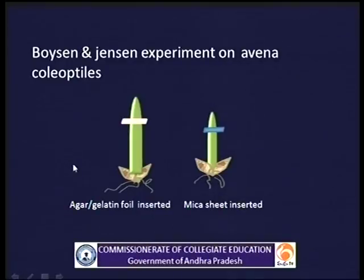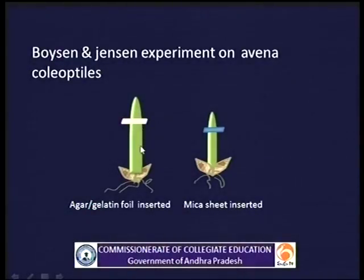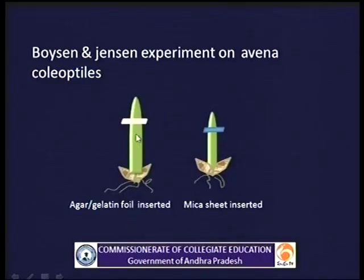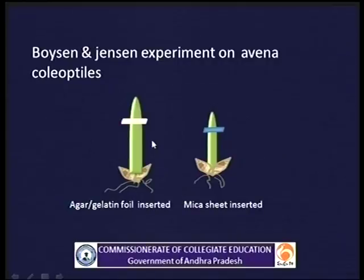Next, Boysen and Johnson experimented on avena coleoptiles and they concluded that the growth promoting substance is a mobile substance which is transported from the tip to the base. In this experiment, they used a permeable gelatin sheet which allows the growth promoting substance to transport from tip to base. And they used a mica sheet which is an impermeable substance which does not allow the growth promoting substance to reach the base. So growth does not occur when this impermeable substance is inserted. They concluded that the growth promoting substance is a mobile substance.